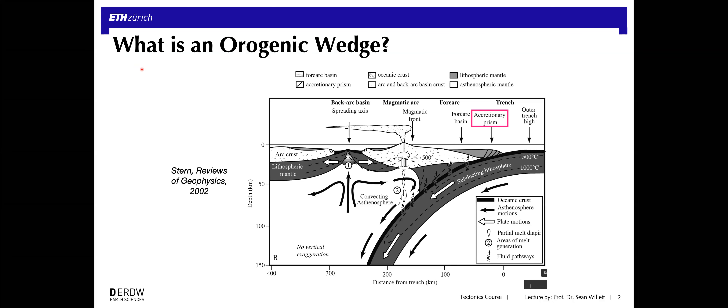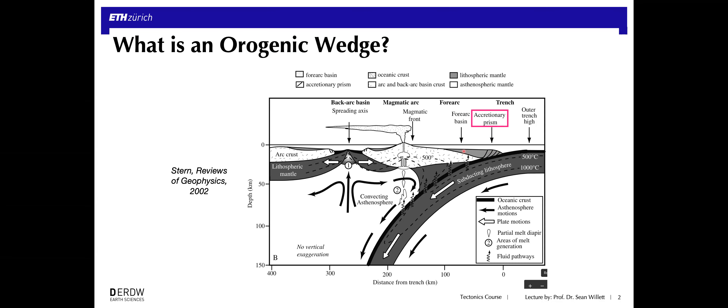We've already seen several of these. We saw, with the structure of a subduction zone, what we refer to as the accretionary prism or the accretionary wedge. This is a wedge-shaped block of upper crustal material that is highly deformed — in fact, deformed into the shape of a wedge. And this is exactly the process we'd like to get into today: how do we form this sort of a crustal structure?